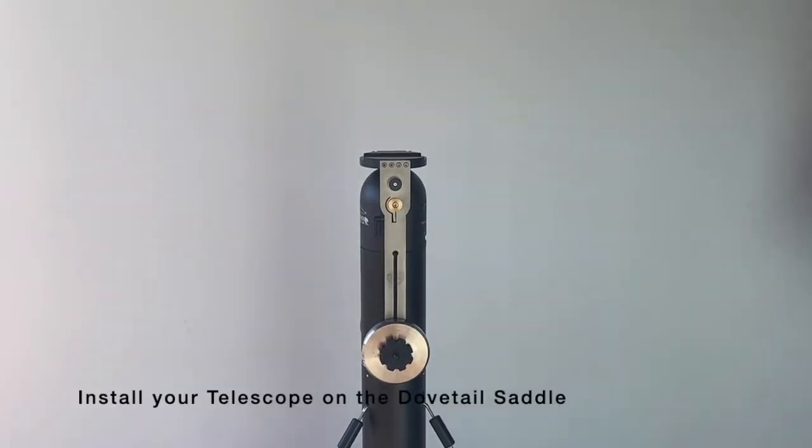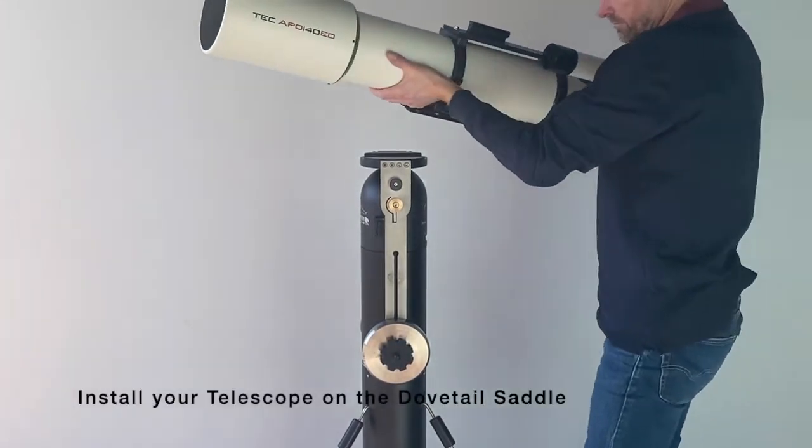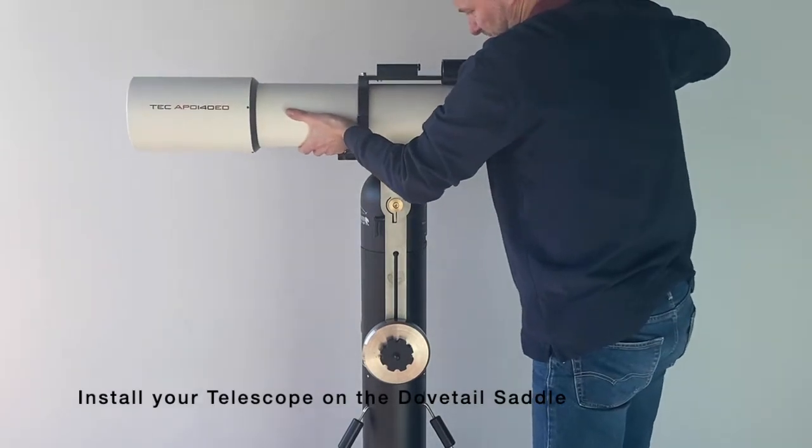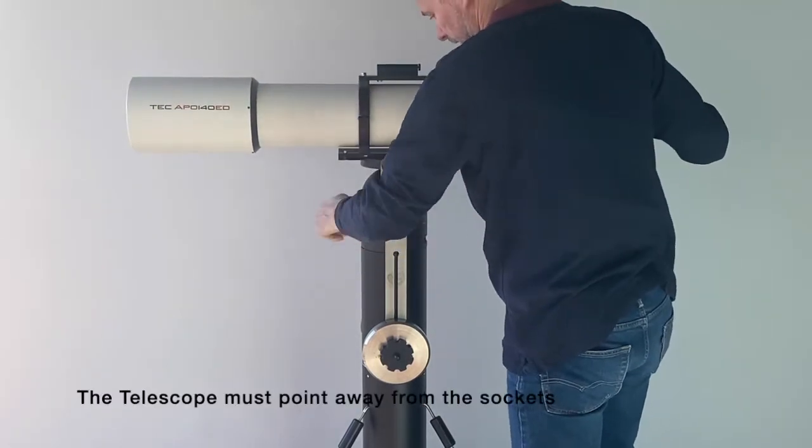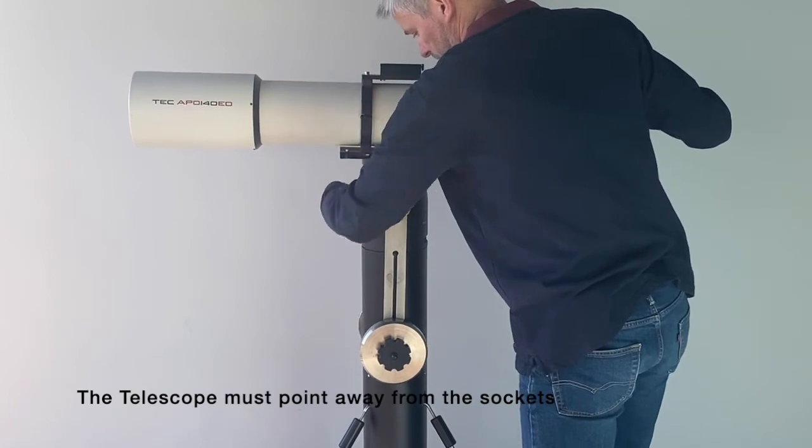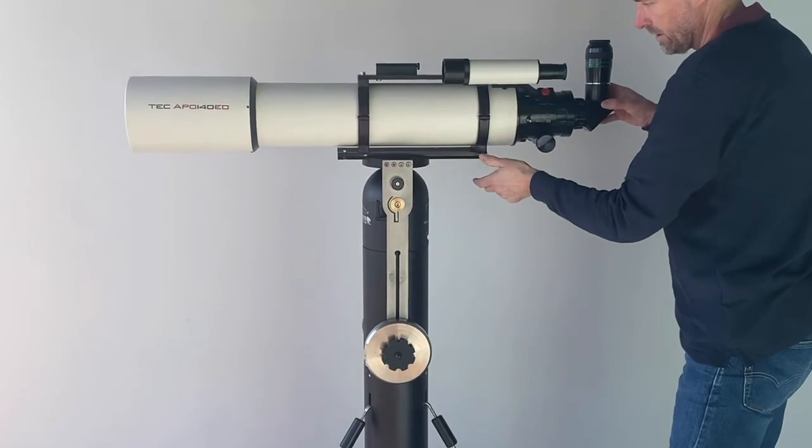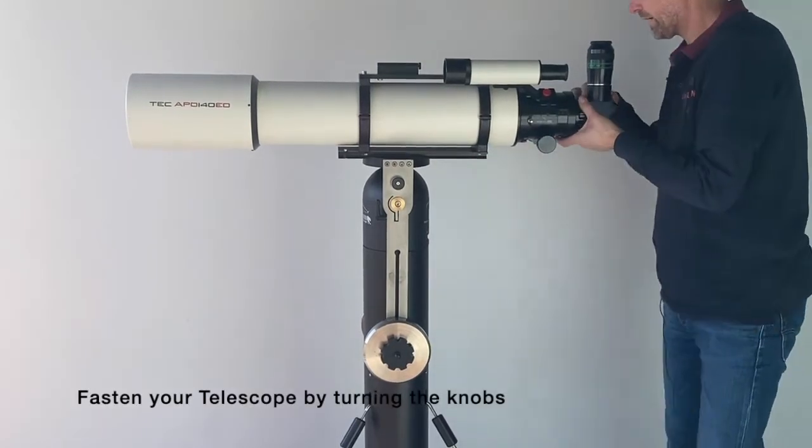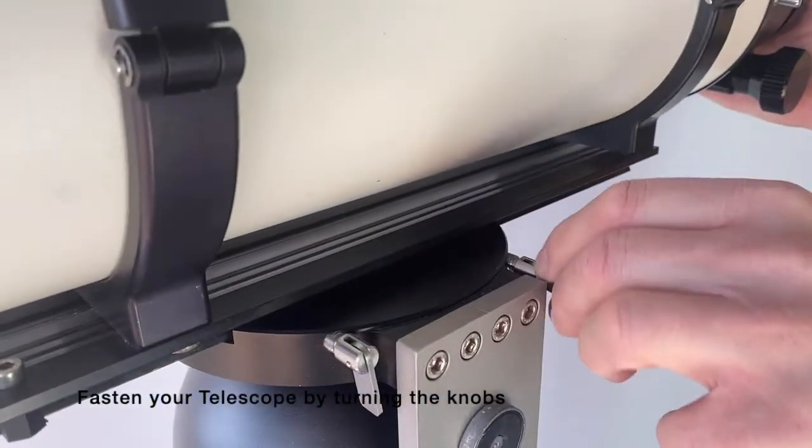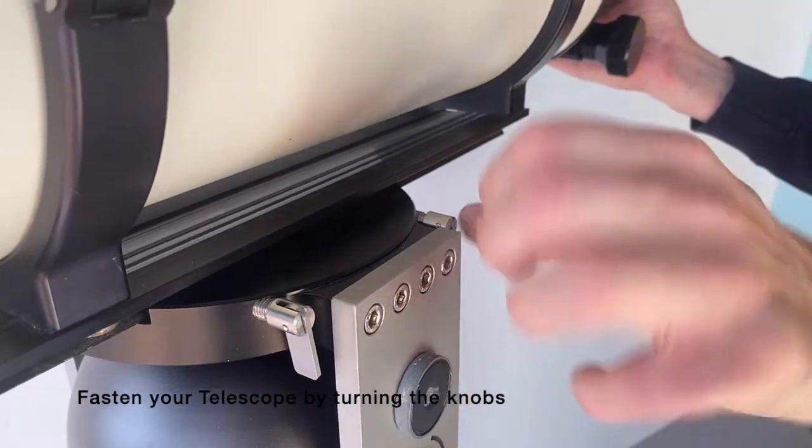Now install the telescope. The front end of the telescope must be away from the side where you plug in the handpad. Adjust the balance of the telescope by sliding it forward and backward in the dovetail and then lock the dovetail.